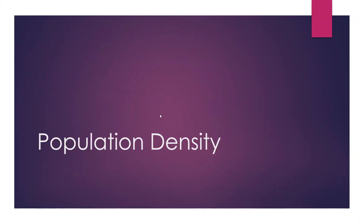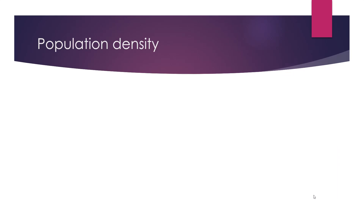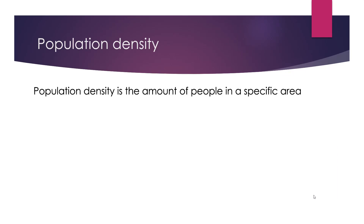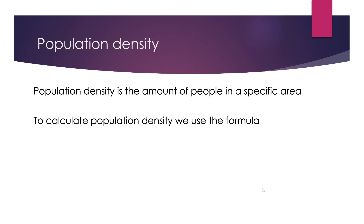In this video, we're going to be looking at population density. Population density is the amount of people in a specific area. To calculate the population density, we can use the formula: population density equals the population — the amount of people there are — divided by the area.